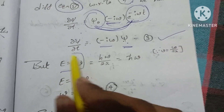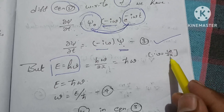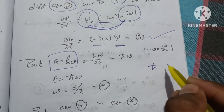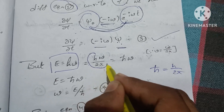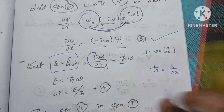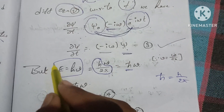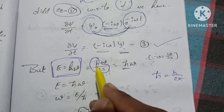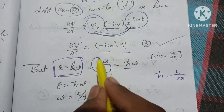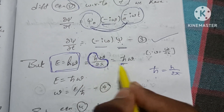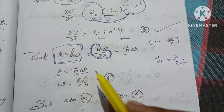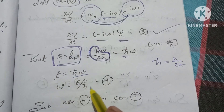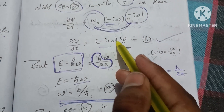Now, we know E = hν. Substituting ν = ω/2π, we get E = h · (ω/2π). Since ħ = h/2π, we replace h/2π with ħ. Therefore E = ħω, and so ω = E/ħ. This is equation 4.